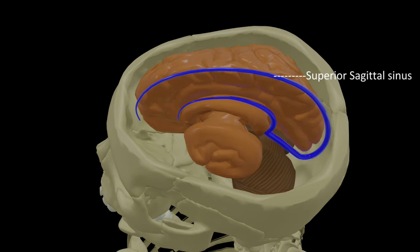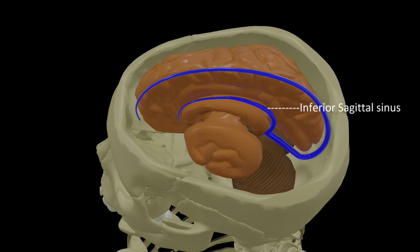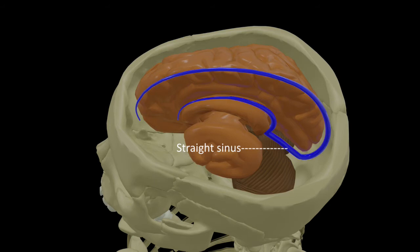Let us remove one cerebral hemisphere in order to see the other sinuses. Here at the lower border of the falx cerebri we can see another sinus called the inferior sagittal sinus. This inferior sagittal sinus unites with the great cerebral vein to form the straight sinus. This straight sinus is related to the upper surface of the tentorium cerebelli, which is the dural fold which separates the cerebrum from the cerebellum. This straight sinus then unites with our previous superior sagittal sinus to form the confluence of sinuses.